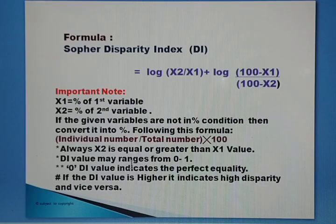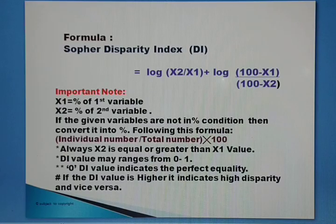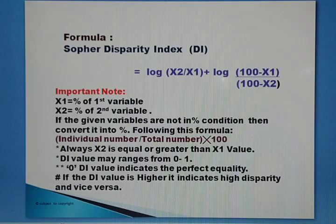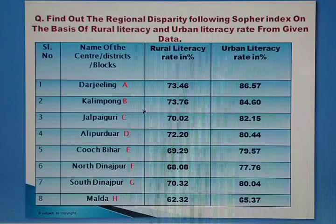The DI value may range from 0 to 1. A value of 0 indicates perfect equality, meaning there is no disparity. A value greater than 0 but close to 0 indicates low disparity, whereas a value close to 1 indicates high disparity.